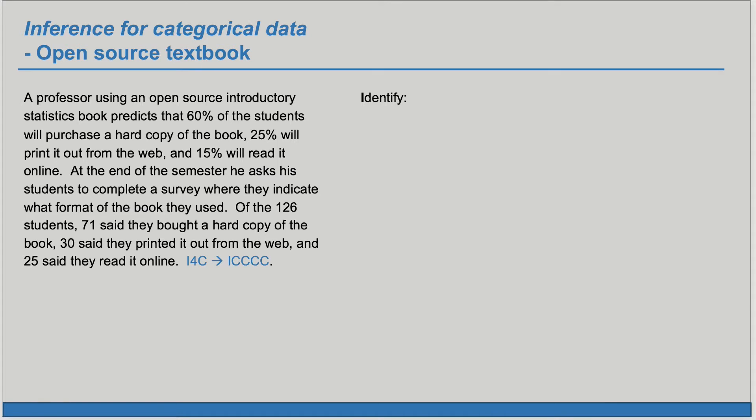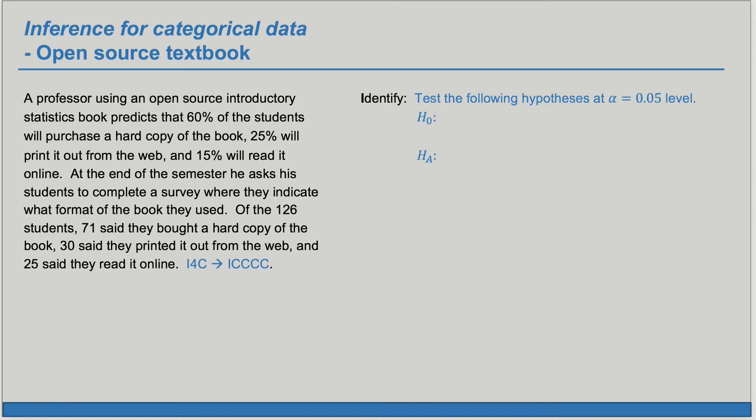The first thing we want to do is identify our hypotheses and we'll test those at the alpha equals 5% significance level. The null claim, the thing that we're going to assume from the outset, is that the professor's predictions are accurate. That 60% would purchase, 25% would print, 15% online. The alternate claim, the thing that we're trying to see if we have enough evidence for, is that the professor's predictions are not accurate. Notice that H sub A doesn't say what those percents are, it just says that they're not what's stated in H sub O.